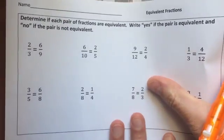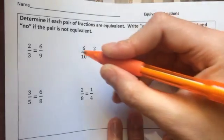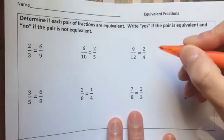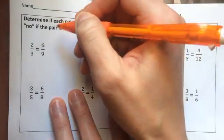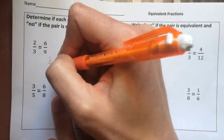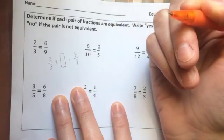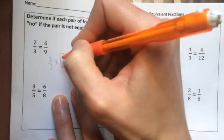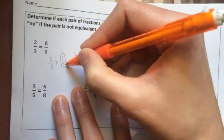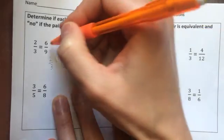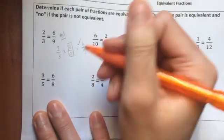In class on Tuesday, they're going to work on an activity where they determine if each pair of fractions are equivalent. They'll write yes if it's true and no if it's not true. For example, I've got to figure out: 2 thirds times what whole equals 6 ninths? It has to be the same number in the numerator and denominator. 2 times 3 is 6. I have to check the denominator: 3 times 3 is 9. That's true. Yes, these are equivalent.